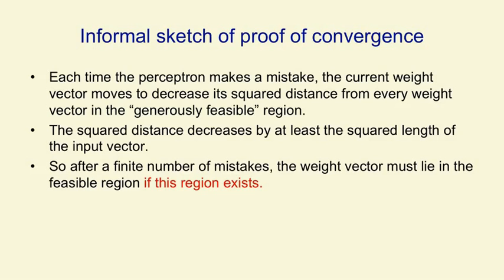Notice the proof all depends on the assumption that there is a generously feasible weight vector. And if there is no such vector, the whole proof falls apart.